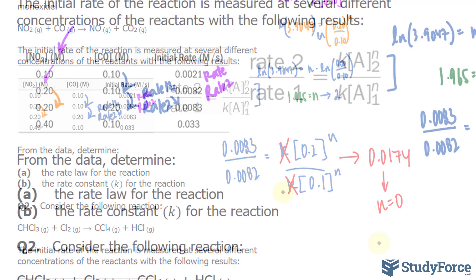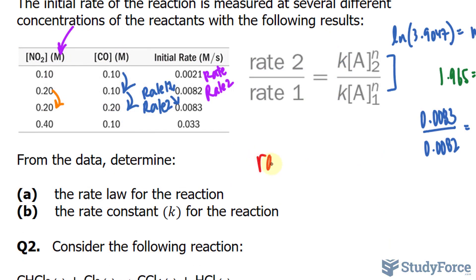So we have rate is equal to k times a concentration. Let's use the concentration of nitrogen dioxide, 0.10 to the power of n. We know the rate. It's 0.0021. And we also know the order of the reaction. It happens to be 2, so I'll replace that with a 2. And all I have to do is solve for this k.